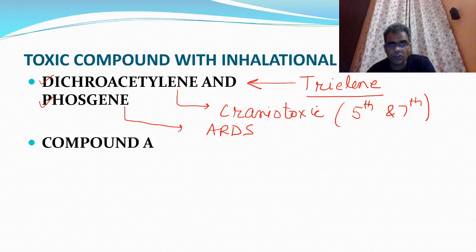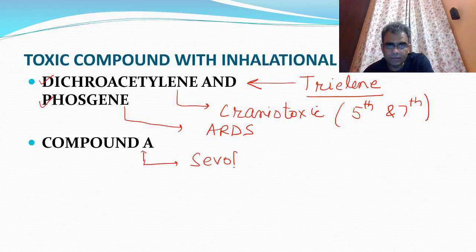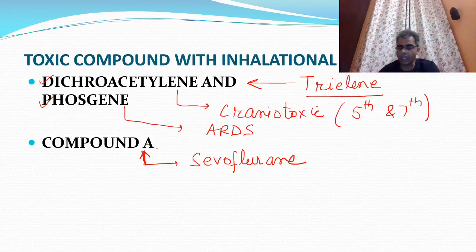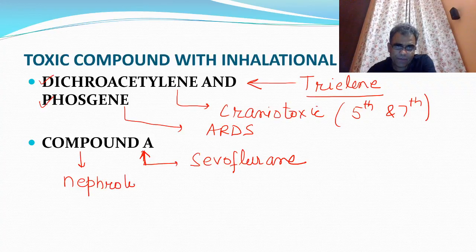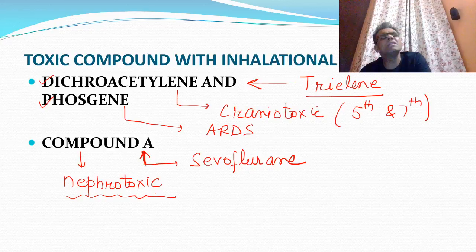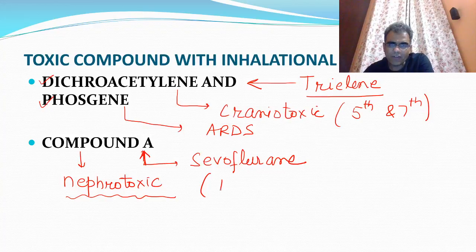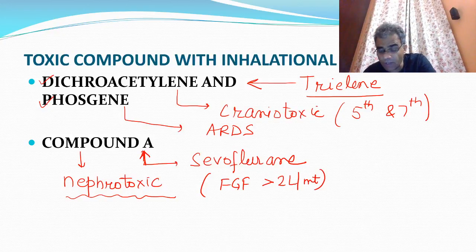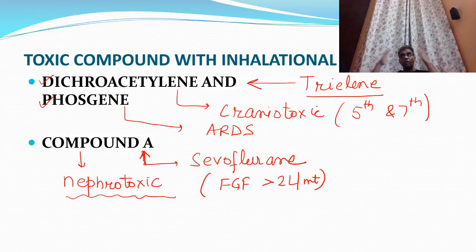Agents used nowadays can also react with soda lime to produce toxic compounds. For example, sevoflurane reacting with soda lime can produce a toxic compound called Compound A, which is a nephrotoxic agent. However, production of Compound A is very rare. We do use sevoflurane with closed circuits every day; the only precaution is that fresh gas flow ideally should be kept above 2 liters per minute when using sevoflurane, rather than the usual 1 liter.